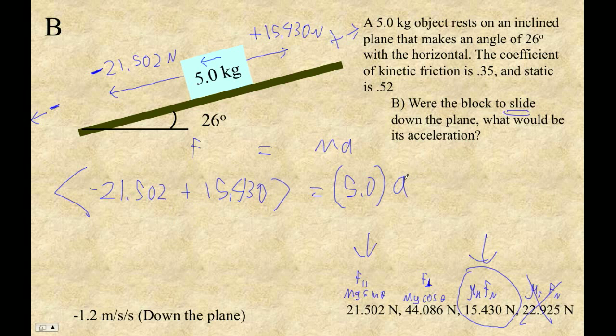Negative 21.502 plus 15.430, that in parenthesis divided by 5.0, and I get negative 1.214 or something like that.